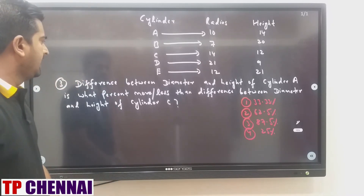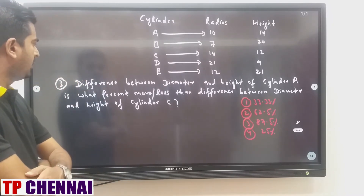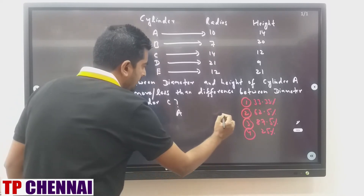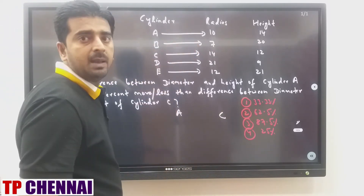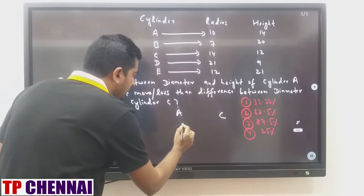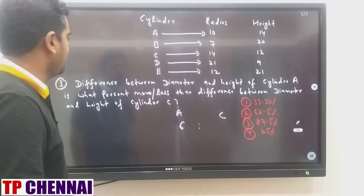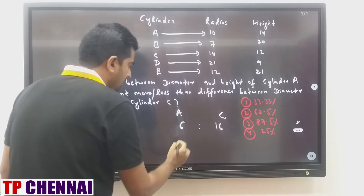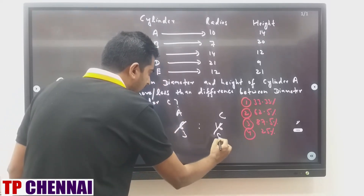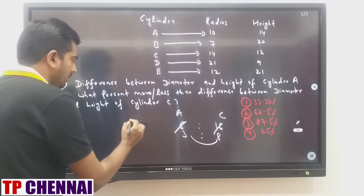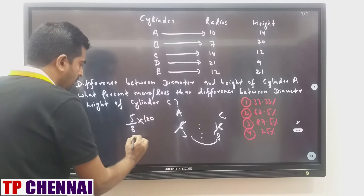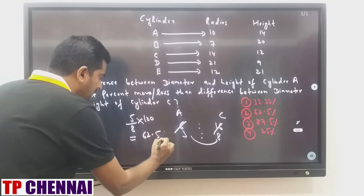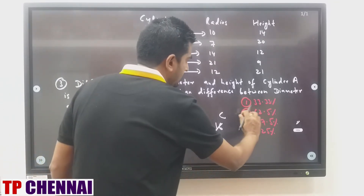Question 3: difference between diameter and height of cylinder A is what percent more or less than the difference between diameter and height of cylinder C? Cylinder A: radius = 10, diameter = 20, height = 14, difference = 6. Cylinder C: radius = 14 (so diameter = 28), height = 12, difference = 16. Percent difference = (16 minus 6) / 16 × 100... result = 62.5% less. Answer is the second option.